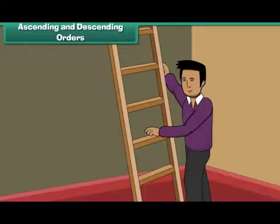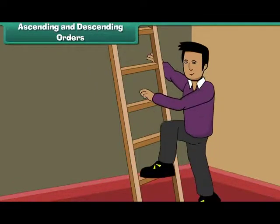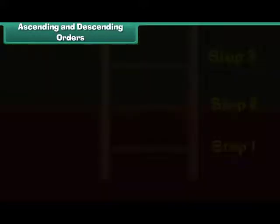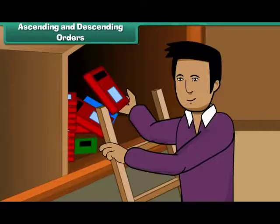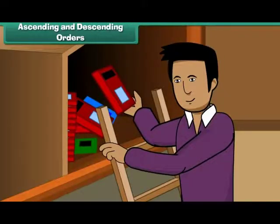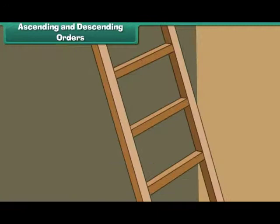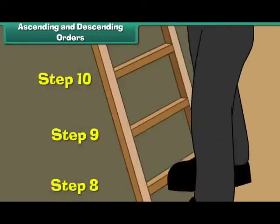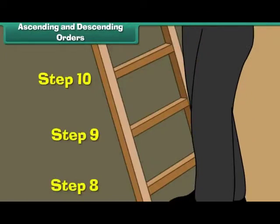Mohit's father climbed up the ladder to search for a book in the attic. He moved up from step one to step two to step three, all the way to step ten, and found the book. He then climbed down the ladder from step ten to step nine to step eight, all the way back to step one. Numbers can also be arranged in a similar way.